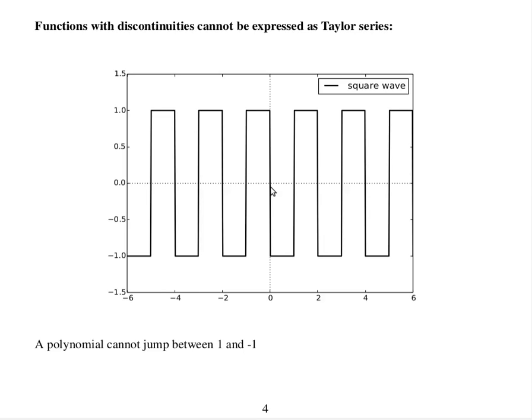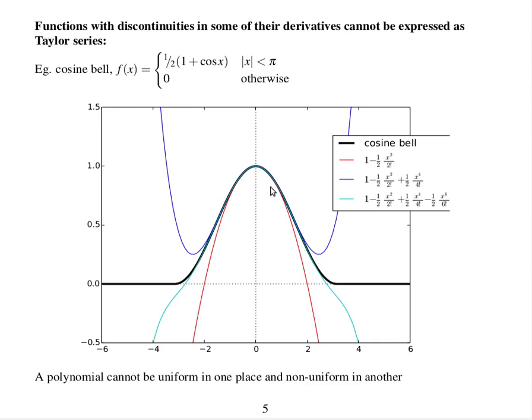Not all functions can be expressed as Taylor series. For example, a square wave, as a polynomial, cannot jump between 1 and minus 1. Functions with discontinuities in some of their derivatives cannot be expressed as Taylor series.